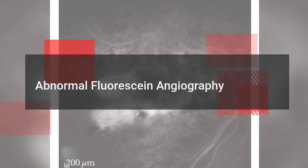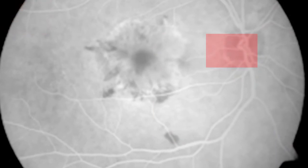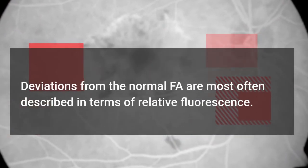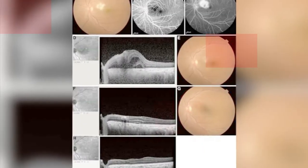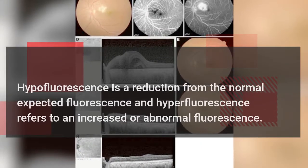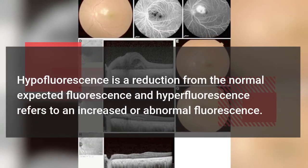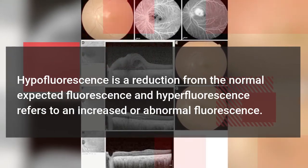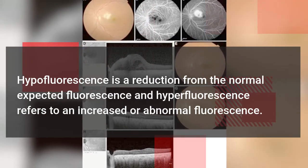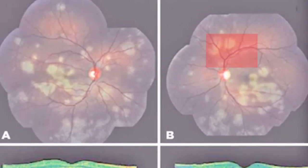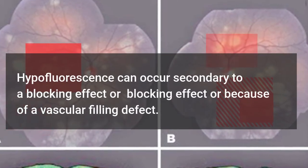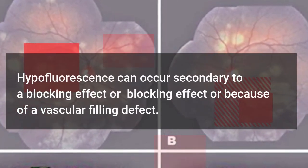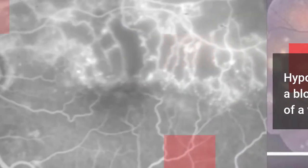Abnormal fluorescein angiography. Deviations from the normal FA are most often described in terms of relative fluorescence. Hypofluorescence is a reduction from the normal expected fluorescence, and hyperfluorescence refers to an increased or abnormal fluorescence. Hypofluorescence can occur secondary to a blocking effect or because of a vascular filling defect.